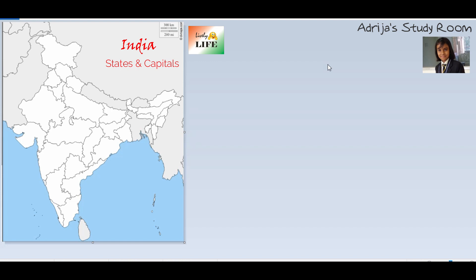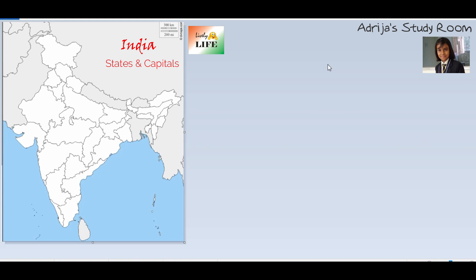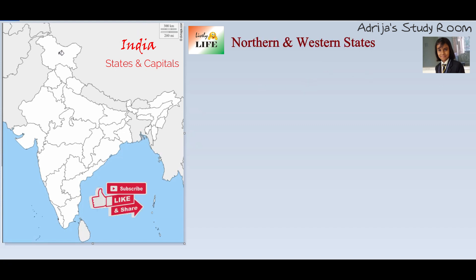Hello friends, I am Adrija. Welcome to my study room. Today we are going to discuss the states and union territories of India and their capitals. There are 29 states and 7 union territories of India. I am going to give you two seconds to try these answers. Let's start from the north.